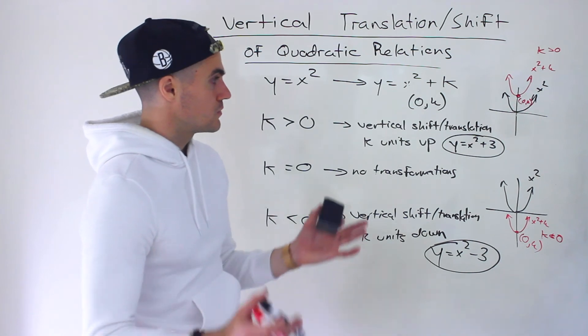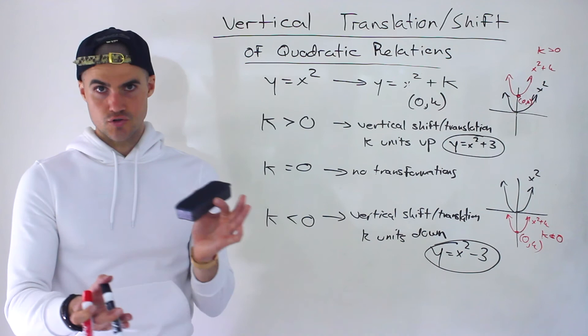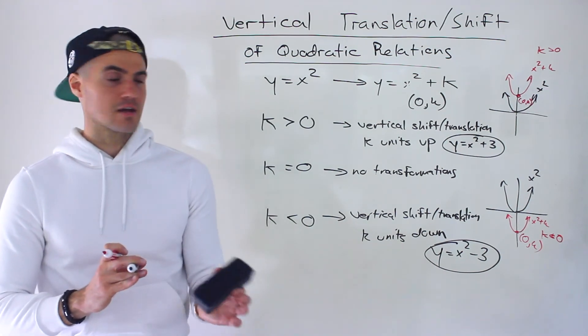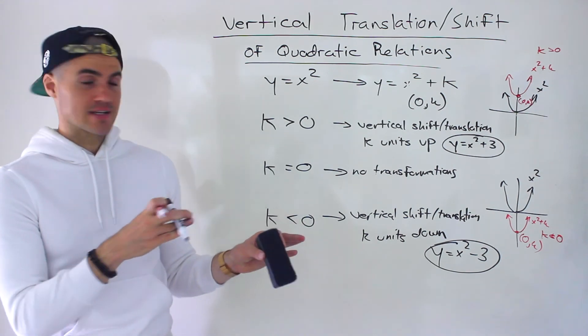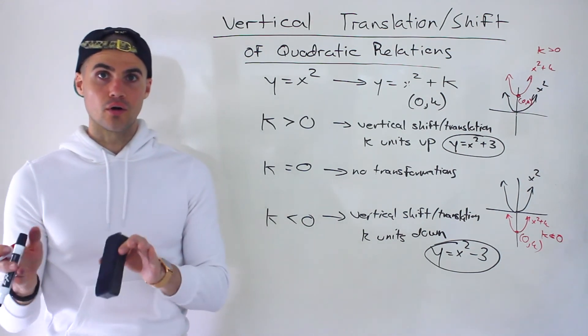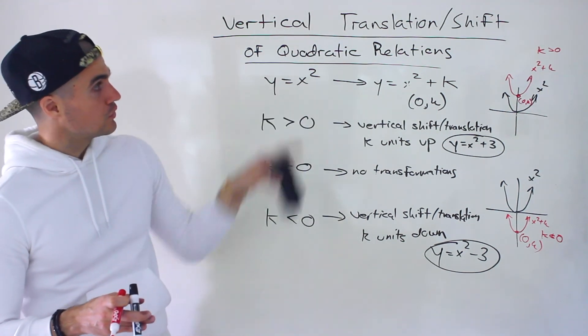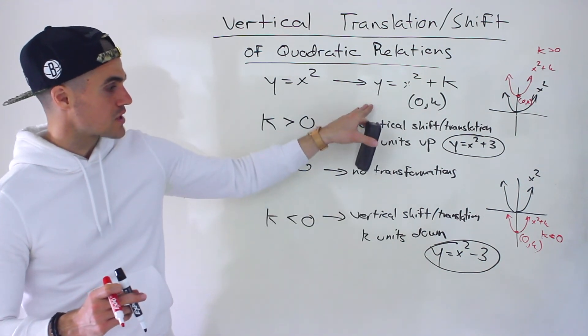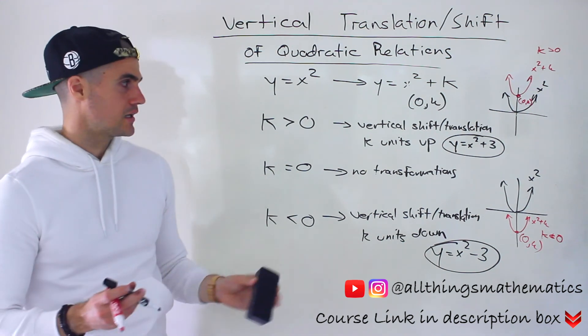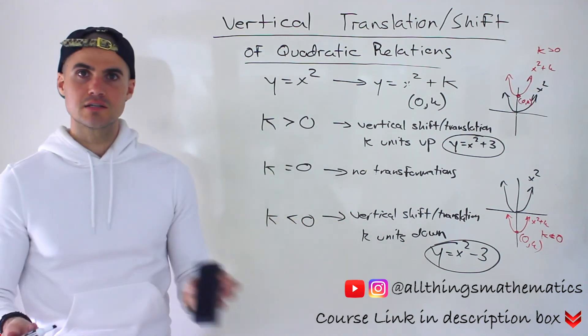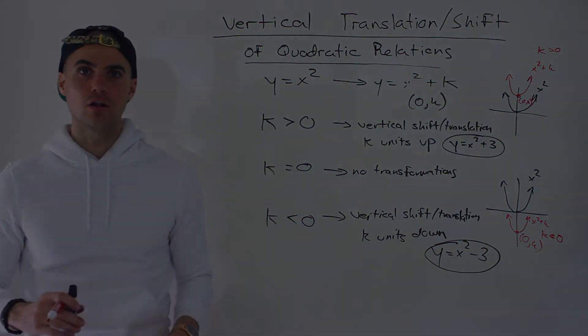That's pretty much it. The a value deals with vertical stretches and compressions and reflections in the x-axis if negative. The h value deals with horizontal translations or shifts, so shifts left or right. The k value, which we covered in this video, deals with vertical translations or shifts, so it goes up or down. In the next videos, we'll do questions applying these transformations, and further down the line, we'll combine all of these transformations.